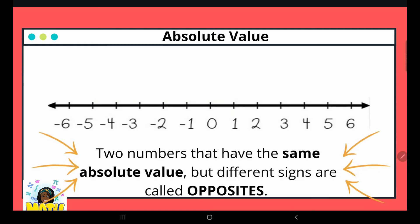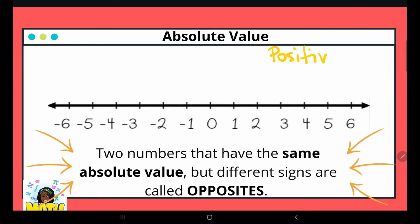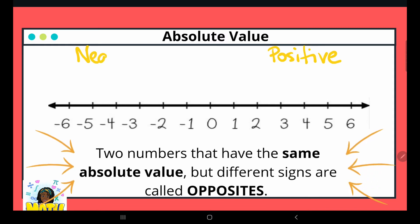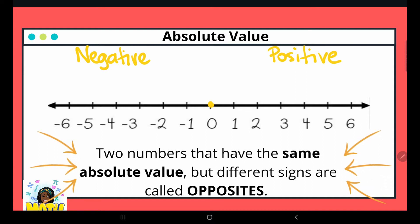Now let's put this in the context of math. Here we have the number line with zero in the center. Positive numbers are to the right, negative numbers are to the left of zero. Remember the position of zero here.